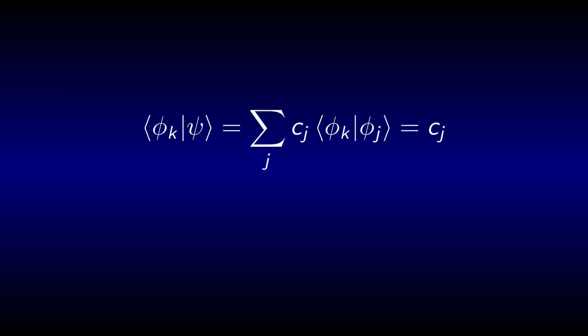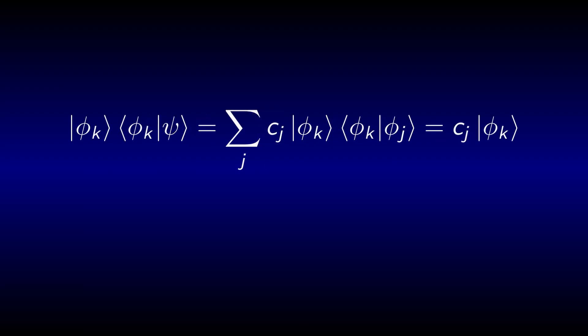We can now write down the overlap of psi with a specific function phi k. If we multiply this result with phi k, we even get the specific part of psi that resembles phi k.